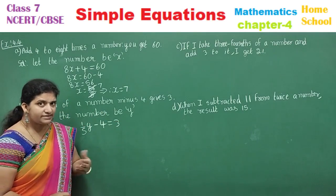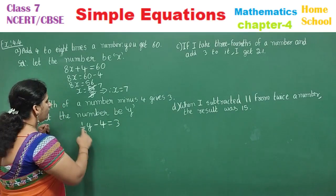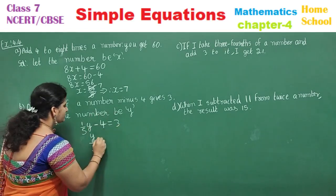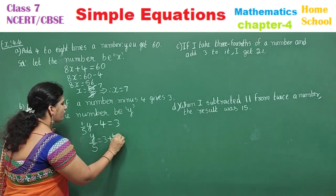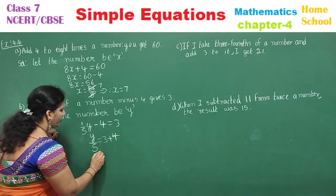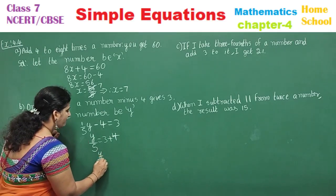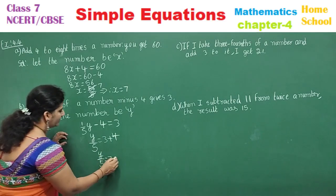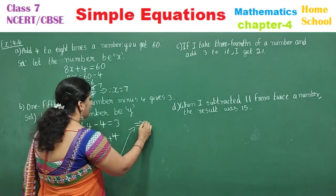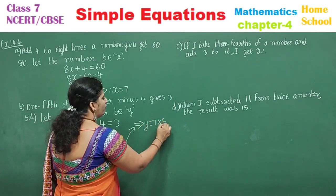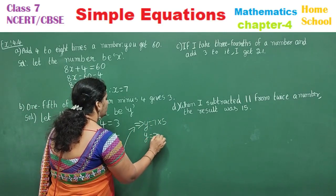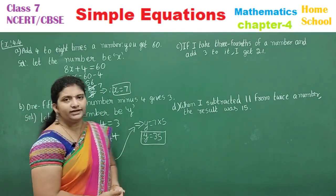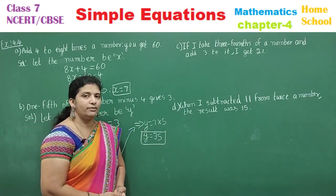'Gives 3' means equal to 3. Transpose minus 4 to the other side as plus 4: y/5 = 3 + 4 = 7. Transpose the 5 to the other side as multiplication: y = 7 × 5 = 35. Therefore y = 35, so the number is 35.